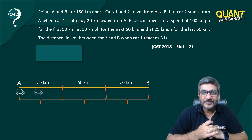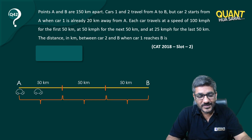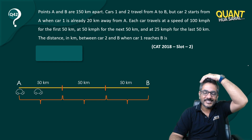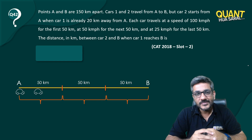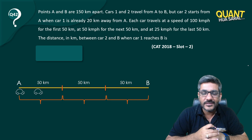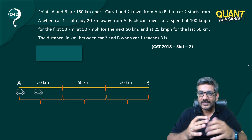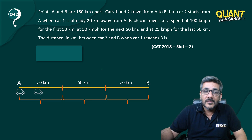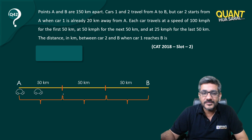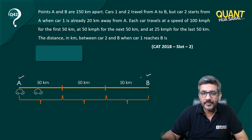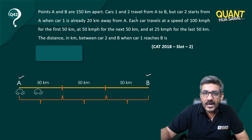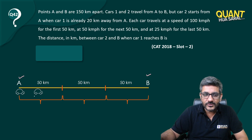Hi everyone, welcome back to question number 42. You can already see something on the screen — I have already made these things to make it easier to understand. Points A and B are 150 kilometers apart, and I have made these two points A and B which are 150 kilometers apart. Car one and car two travel from A to B.